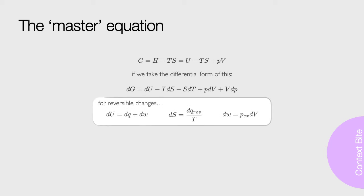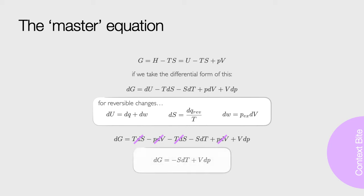Now, going back to our definition of the first law and the second law, I have relationships for U, internal energy, S, entropy, and W, work. Substituting into our differential expression for Gibbs and cancelling, we end up with an expression that says the Gibbs free energy changes with two things, the temperature and pressure.